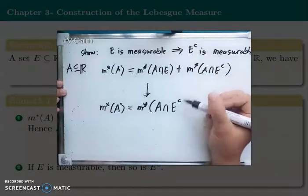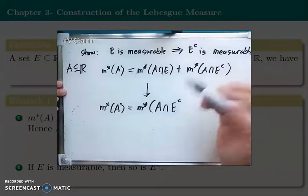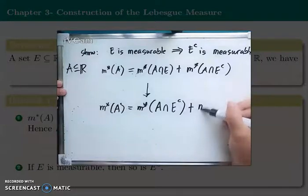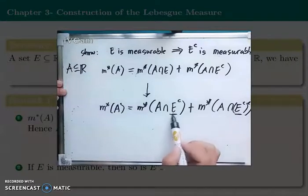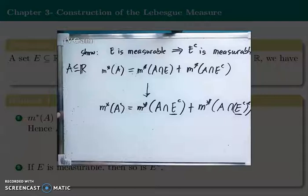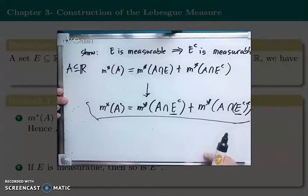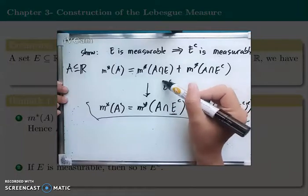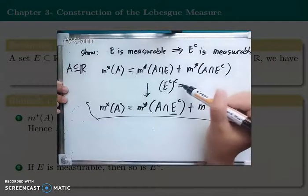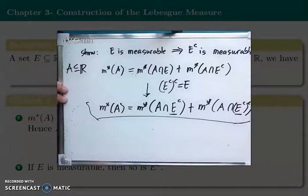Instead of E, we use Eᶜ here, because we want to show that Eᶜ is measurable. So we want to show: λ*(A) = λ*(A∩Eᶜ) + λ*(A∩(Eᶜ)ᶜ). To show this, we use the concept of complementation: (Eᶜ)ᶜ = E. Then by commutativity, the result follows from our original assumption.